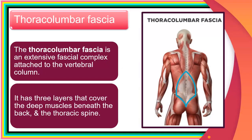Before we round off this part of the lecture, we want to look at the fascia covering a good part of the muscles seen both from the back and in the deep part of the abdomen. This fascia is the thoracolumbar fascia — here is the posterior aspect of the thoracolumbar fascia. It is an extensive fascia complex attaching to the vertebral column, and it has three layers: the anterior, the middle, and the posterior layers, which wrap around the various muscles seen at the back and the posterolateral aspect of the trunk.